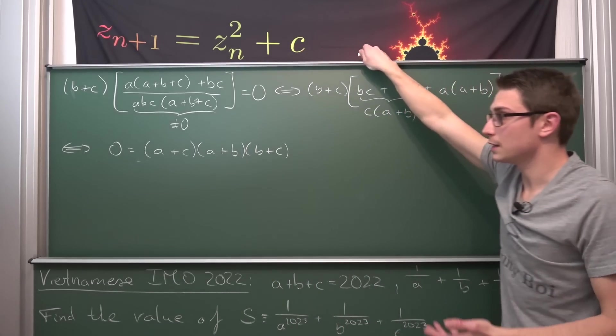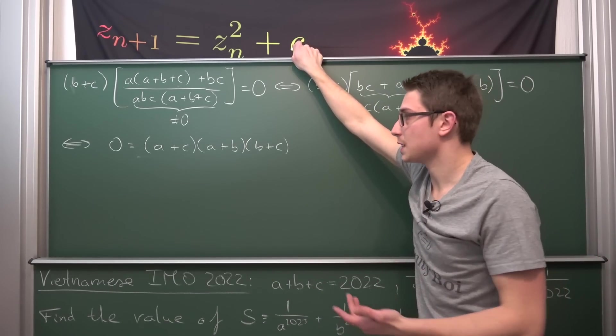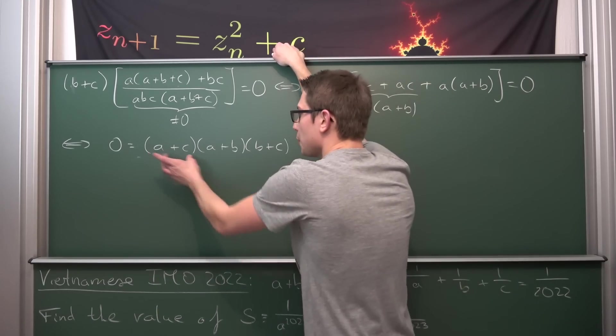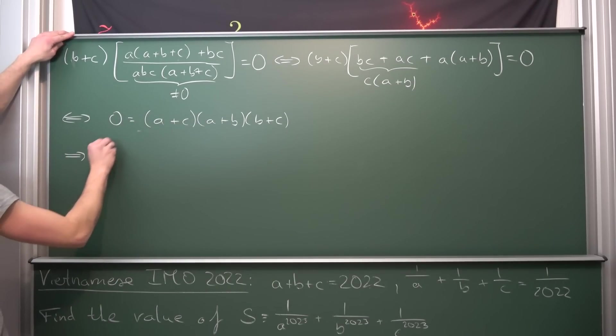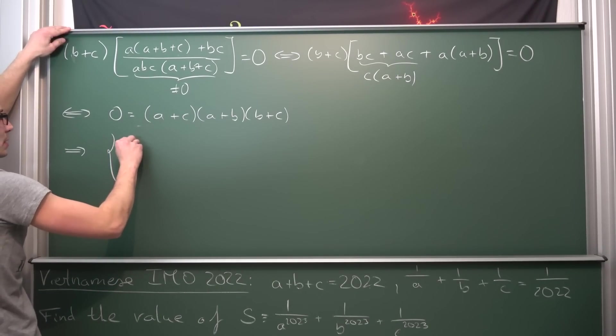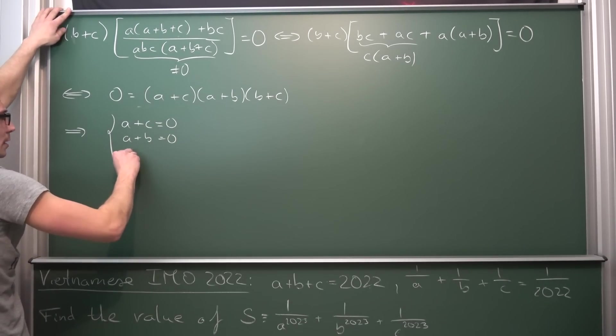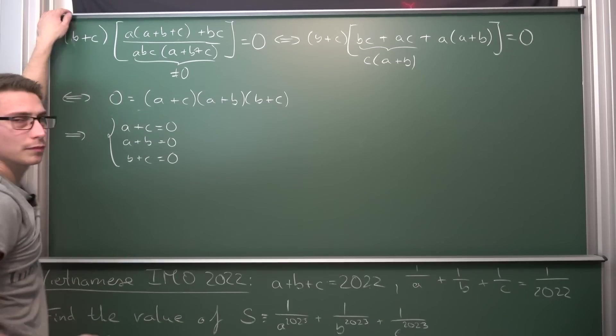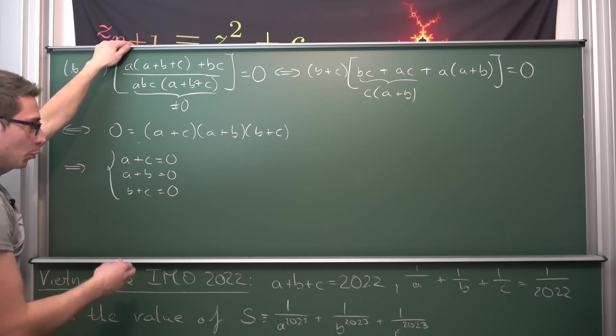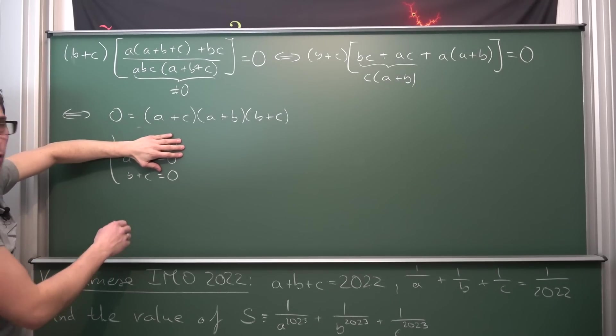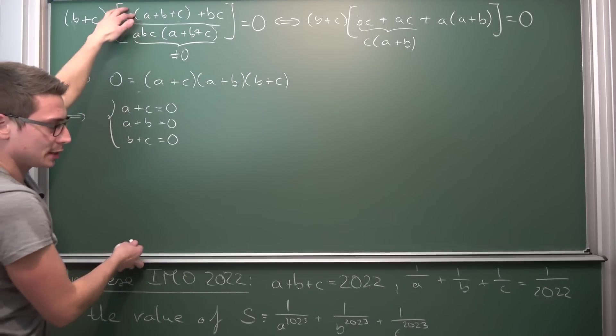Now this is good. It's now broken down into linear factors and now we can go through the same statement as before. This product can only be zero if and only if one of the parts is equal to zero. Meaning we got three equations going basically, namely that A plus C is equal to zero. We got A plus B is equal to zero and we got B plus C is equal to zero. All of these are ORs. And now we can plug, let's go with B plus C. Let's suppose that B plus C without loss of generality is equal to zero.